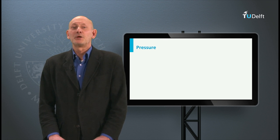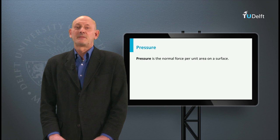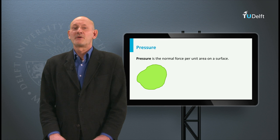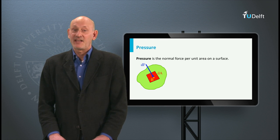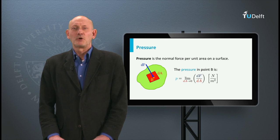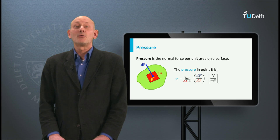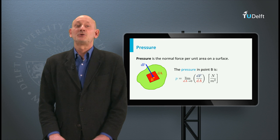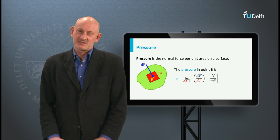Let's first look at the pressure in a point of the flow field. Pressure is the normal force per unit area on a surface. Here we can see a surface with an incremental force dF acting on an incremental part dA of the surface. Somewhere on the surface dA there is a point B. The pressure in point B is the limit of dA going to zero of the incremental force dF divided by the incremental area dA. It has the unit newtons per square meter or pascal.